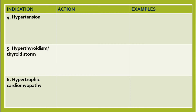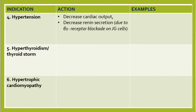The fourth indication is hypertension. Beta blockers firstly decrease cardiac output. They also decrease renin secretion. Renin is produced by juxtaglomerular cells in the kidney in cases of decreased perfusion. Renin is responsible for converting angiotensinogen into angiotensin I, which is then converted to angiotensin II by angiotensin-converting enzyme.